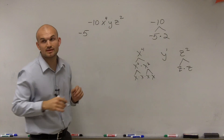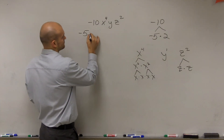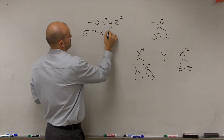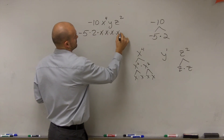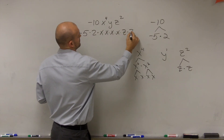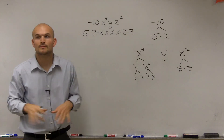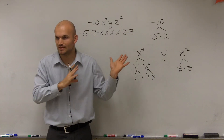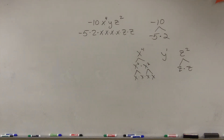You need to represent them as multiplication. So it would be negative 5 times x times x times x times x times y times z times z. And that would be your final factored form. It's so ugly to write that out.